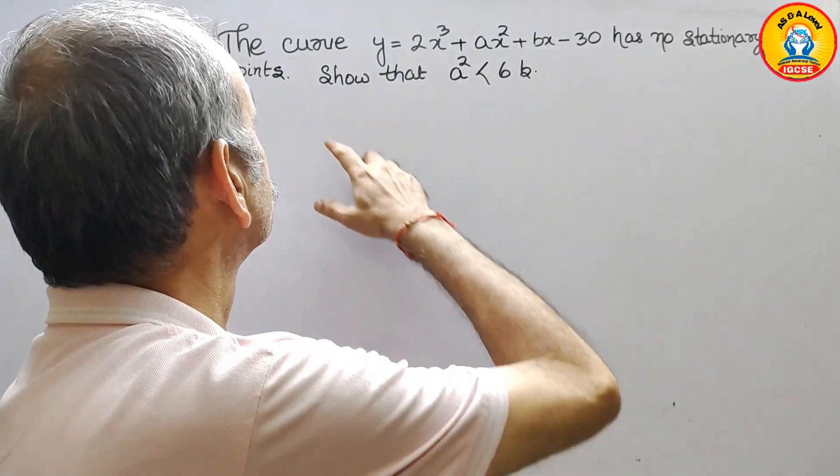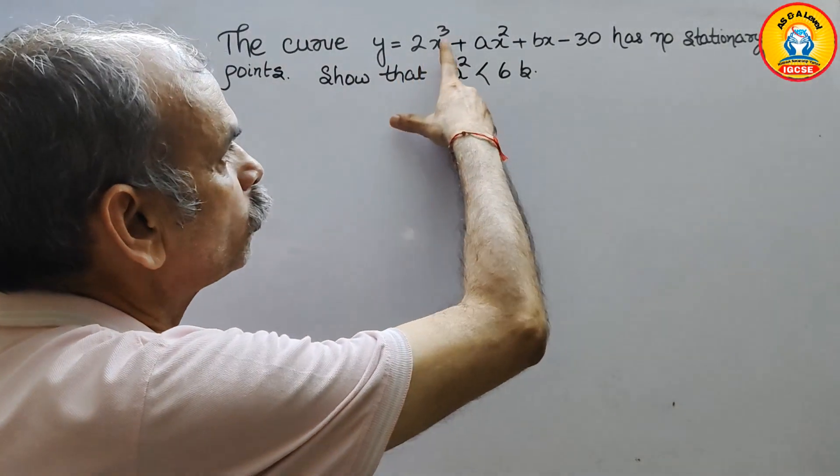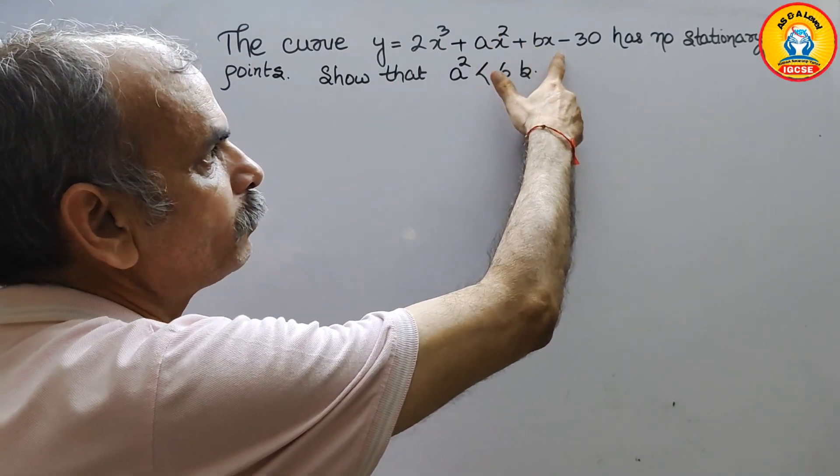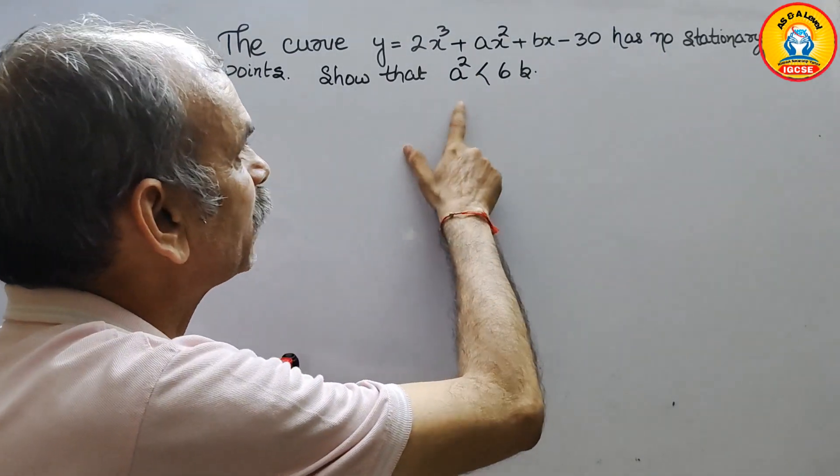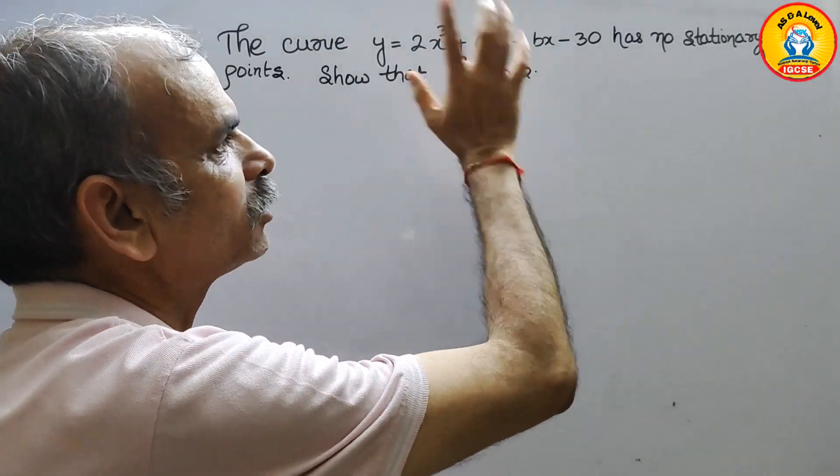Your question is, the curve y equals 2x³ plus ax² plus bx minus 30 has no stationary points. Show that a² is less than 6b.